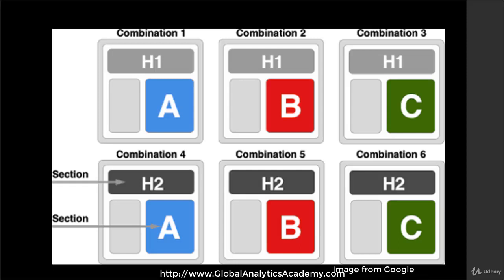Here is an example of a multivariate test. You have six combinations made out of two elements: heading one and heading two, and three different colors for one of the boxes. So in total, we are testing heading one with blue, red, and green color, and heading two with blue, red, and green color. We are trying to figure out which combination works best, and also which elements have how much weight or impact in driving the outcome that you desire.